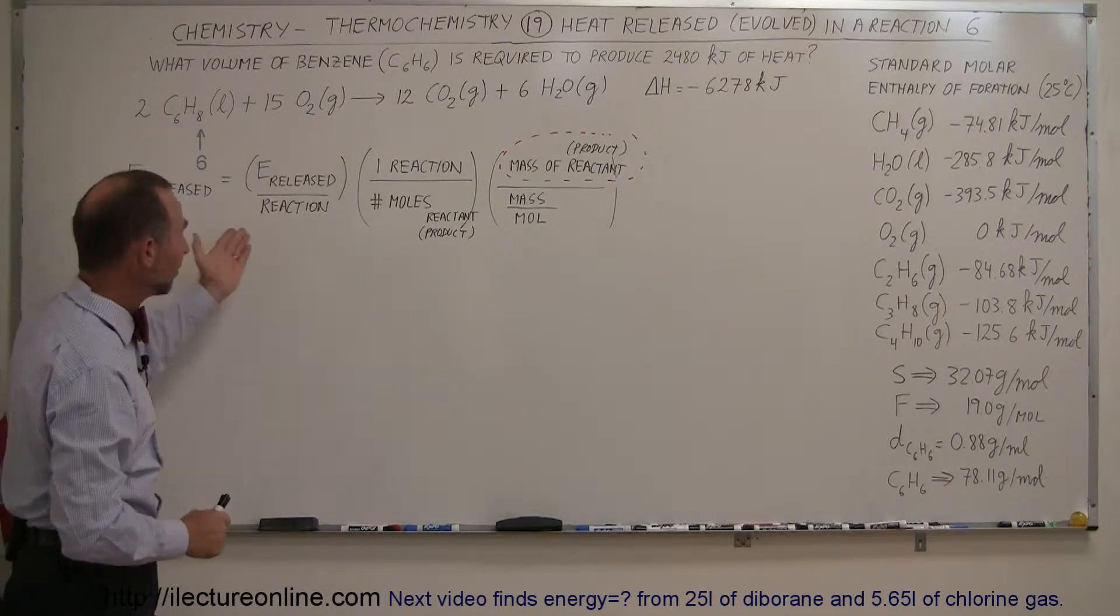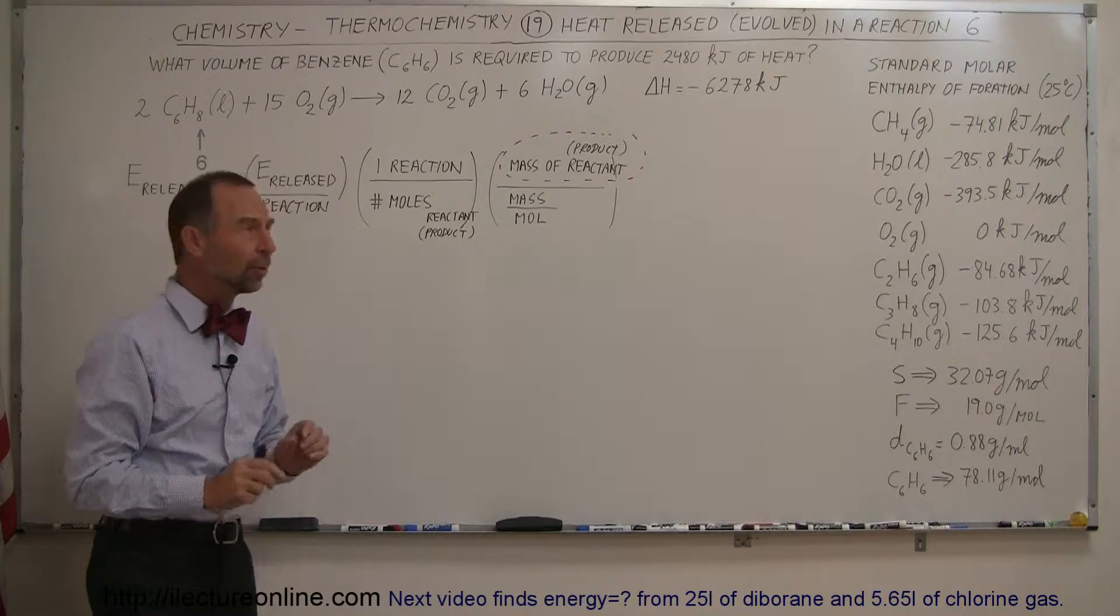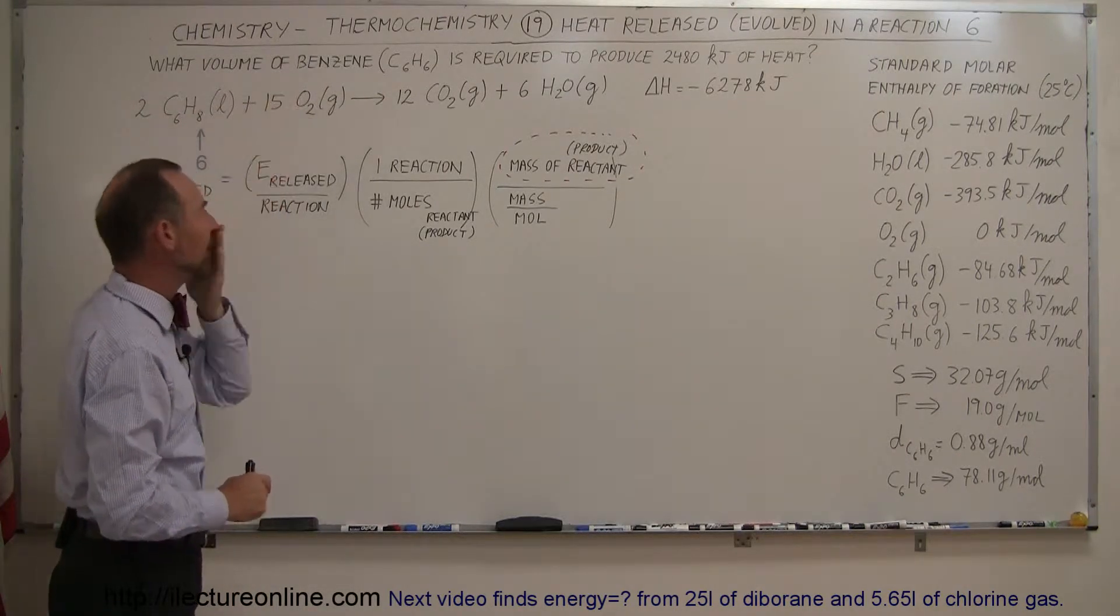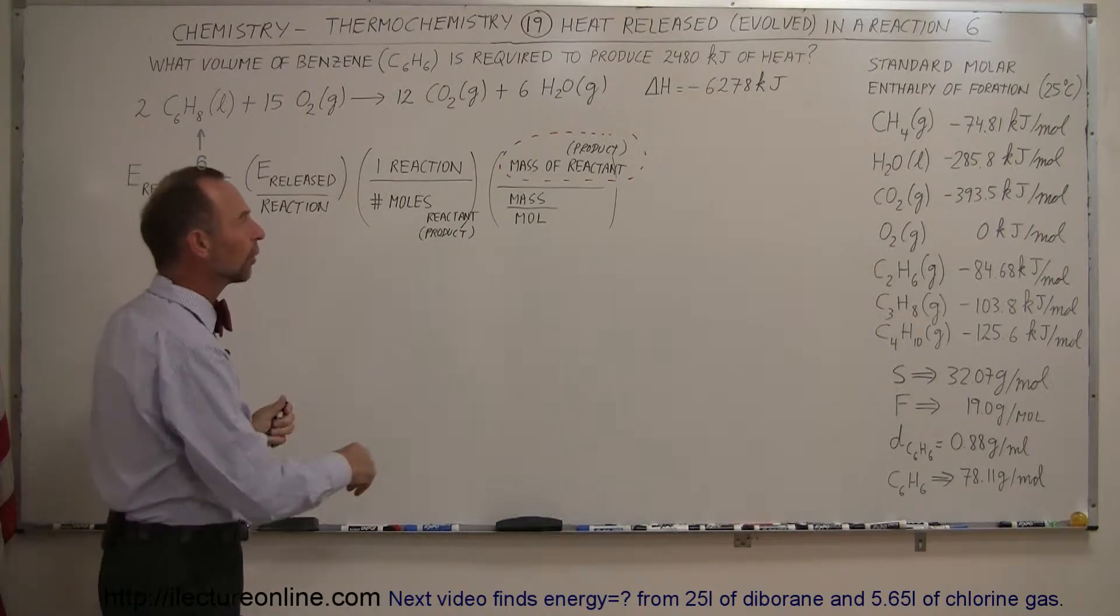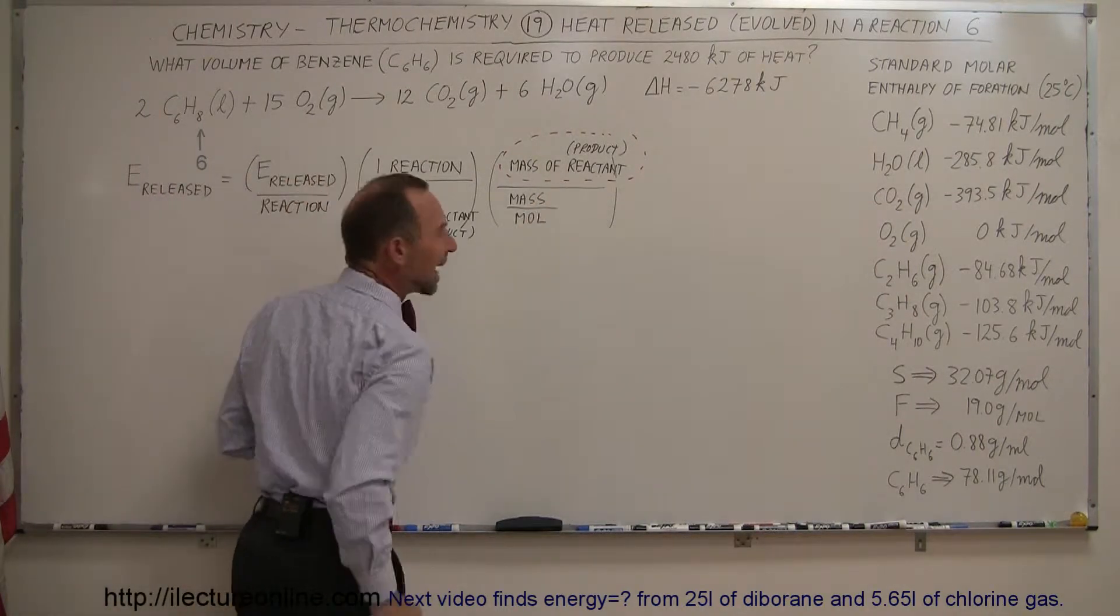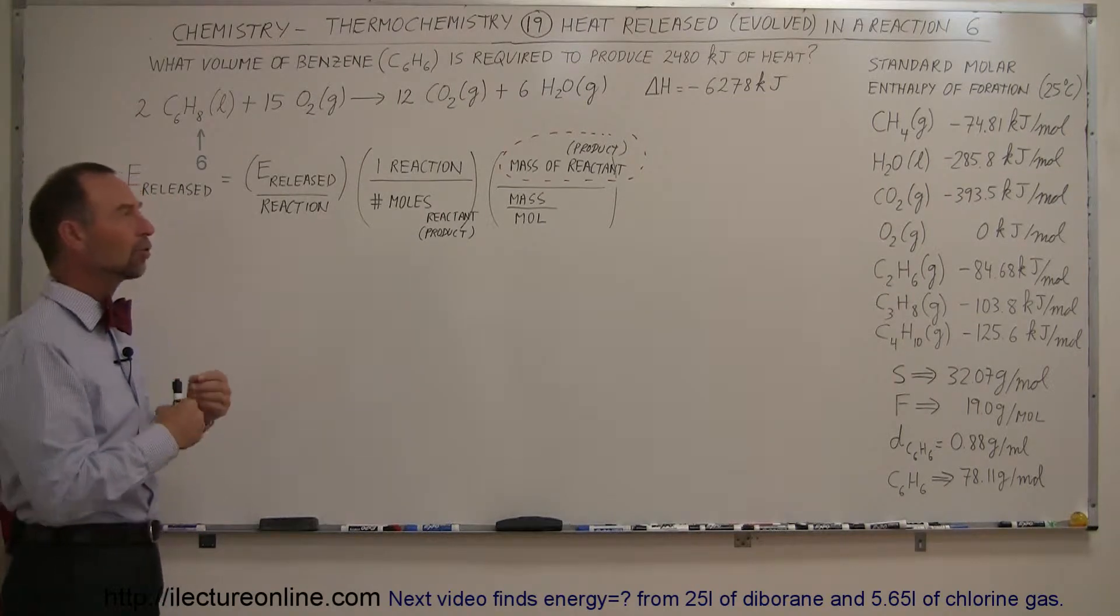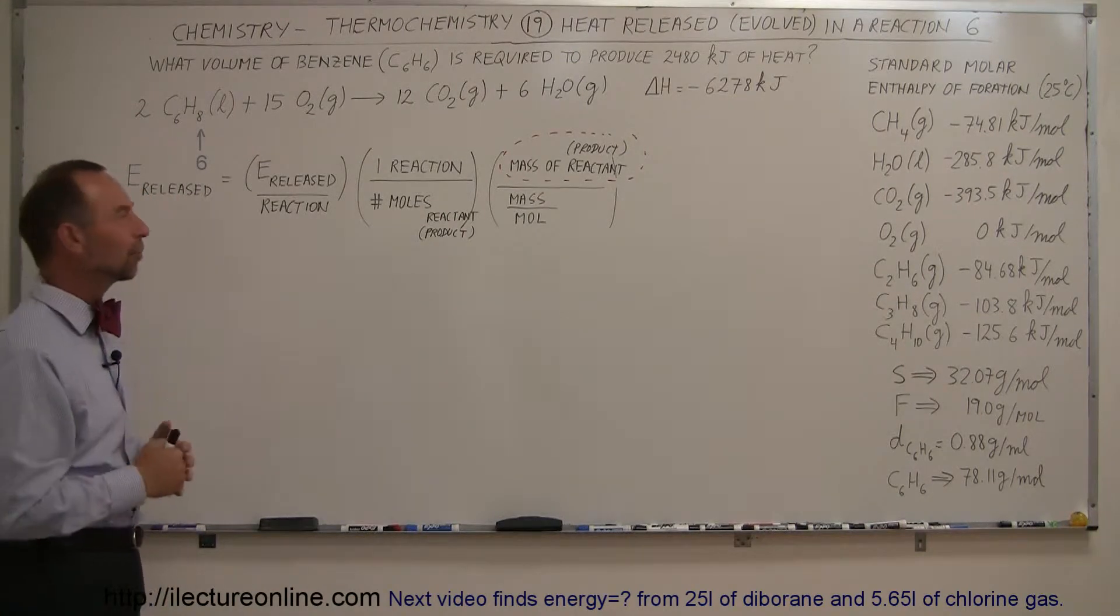So we use the same equation as we did before, but of course there's one wrinkle to it: they're asking us what volume of benzene. So first what we're going to do is figure out the mass of the reactant required to produce the energy, and from that we're going to try to find the volume. So that's the second step to the problem.